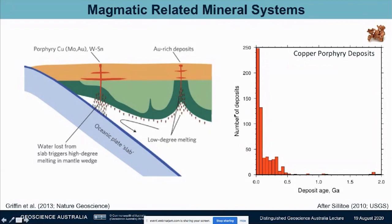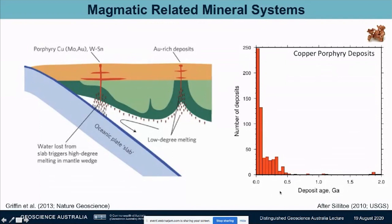As the plate subducts, water is lost from it and triggers melting in the mantle wedge. The melts rise under buoyancy to the surface and concentrate metals at the surface. On the right-hand side, you can see a histogram of the number of deposits and their age — and generally they're young, less than 500 million years old. Now, for a geologist, 500 million years is quite recent.